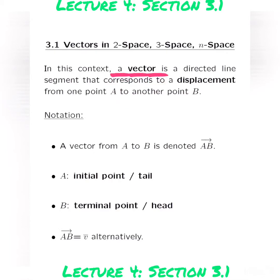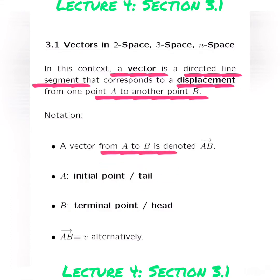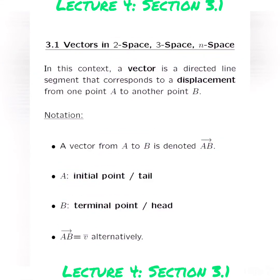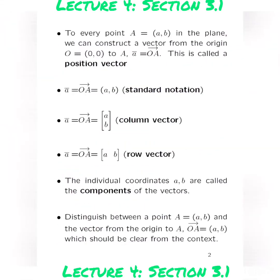What is a vector? It's a directed line segment that corresponds to a displacement from one point A to another point B. The vector from point A to B will be denoted by AB with an arrow on top, where A is the initial point, or the tail, and B is the terminal point, the head. Alternatively, we can take the vector AB arrow and just denote it by a vector V bar.